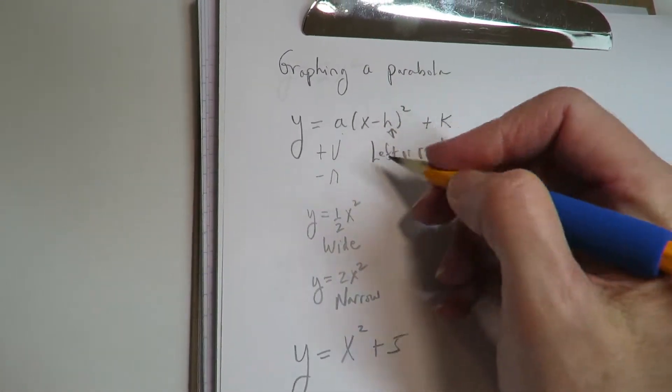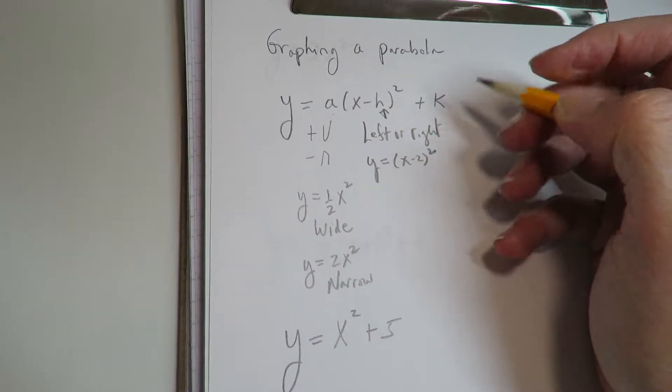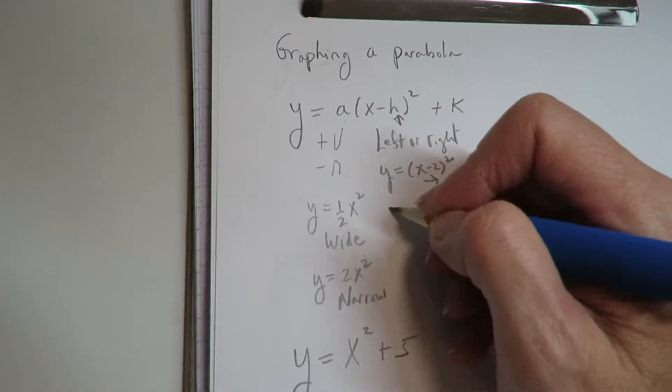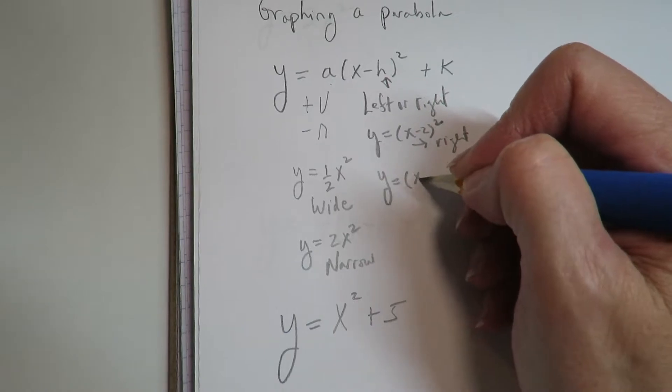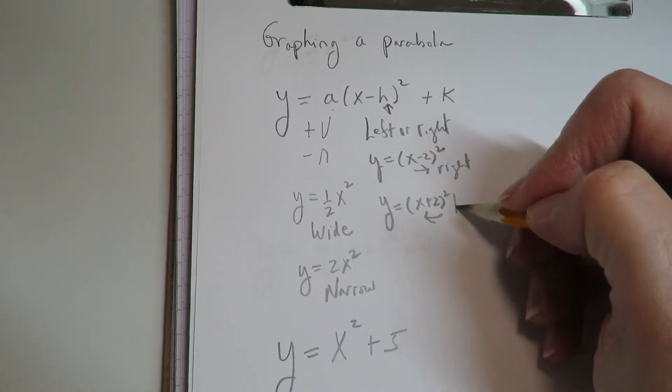That's what the h is referring to. So if you have something like y equals x minus 2 squared, negative means you're going to the right. You have something like x plus 2 squared. Positive means you're going to the left.